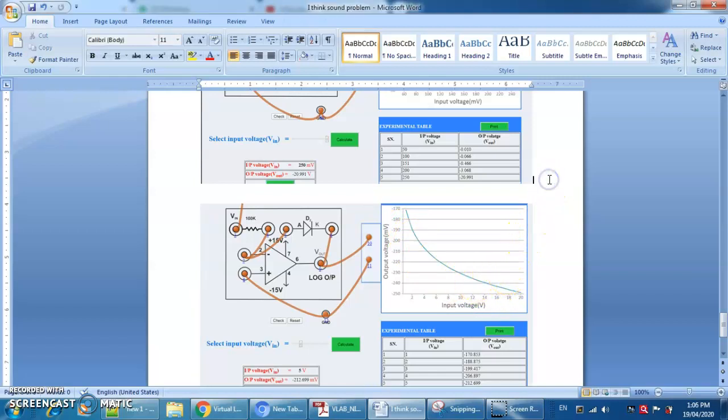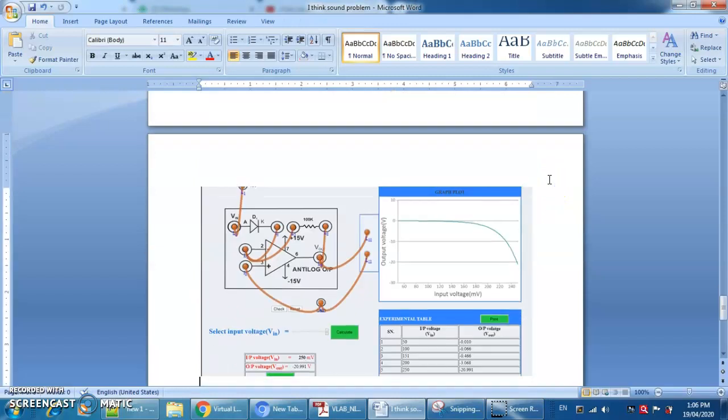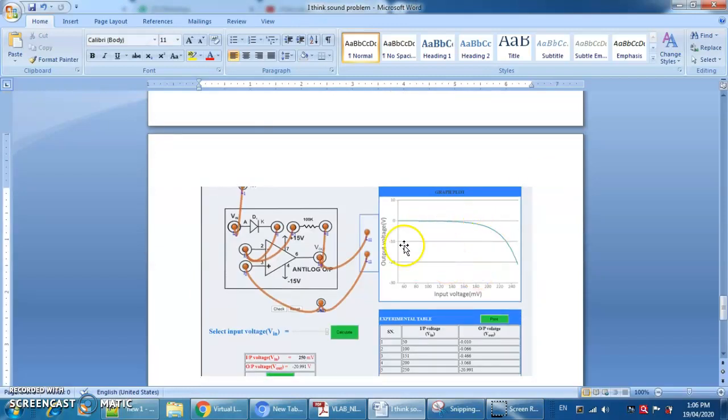So the main difference is log amplifier is here. And if you see this is the graph of anti-log. In log amplifier the output is also decreasing, but for some very small input voltage, it is decreasing so fast.